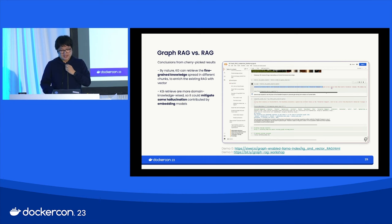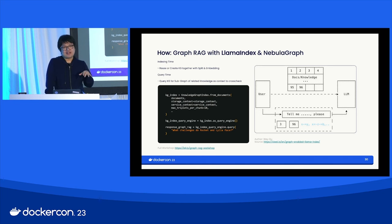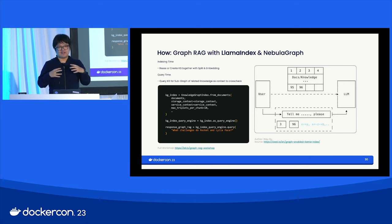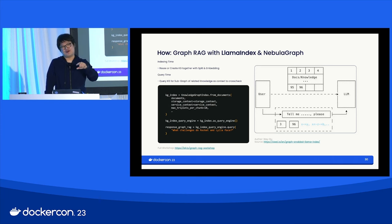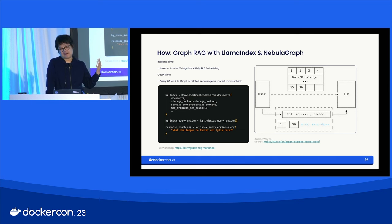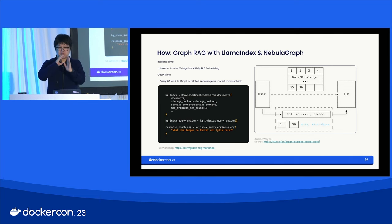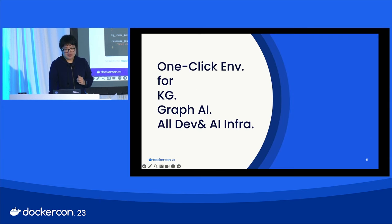Everything I mentioned can be reproduced locally, and I've upstreamed the approach to the open-source community. With LlamaIndex you can now do Graph RAG in just three lines of code: one line to create a knowledge graph and vector embedding index from documents, one line to create a query engine with graph RAG enabled, and one line to ask a question.